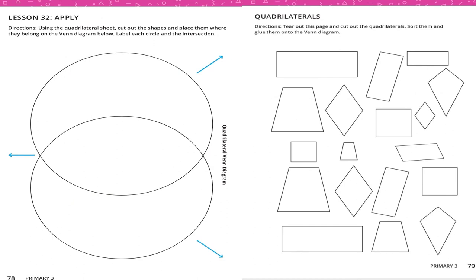Also in Lesson 32 we have a Venn diagram. A Venn diagram is a strategy we use to sort shapes according to their features. In the first circle we place shapes with more than three sides. In the second circle we place shapes where each two opposite sides are parallel. Between the two circles is the intersection area.